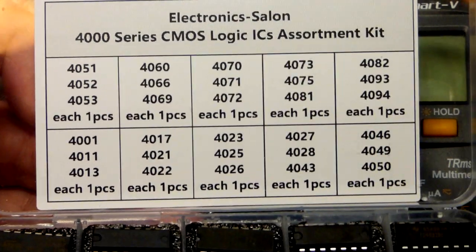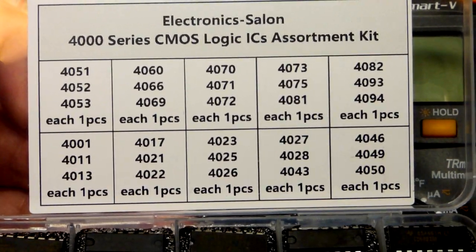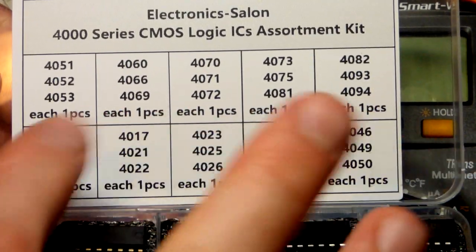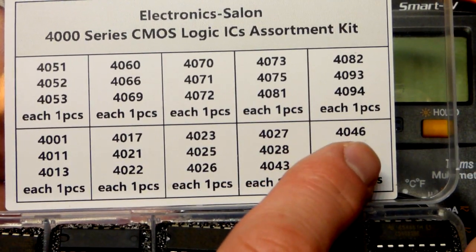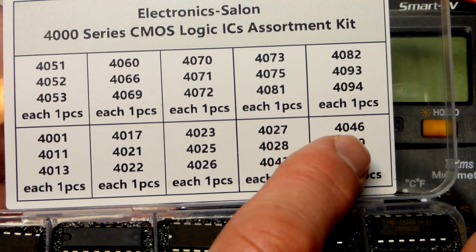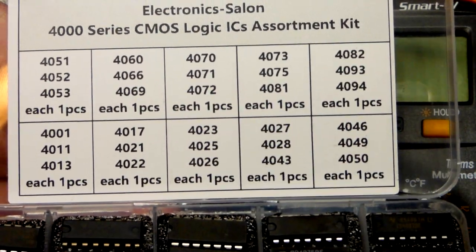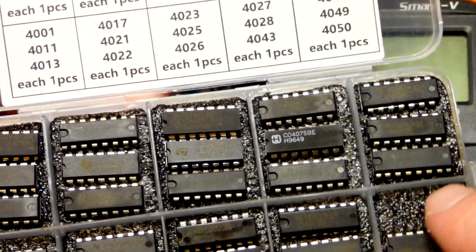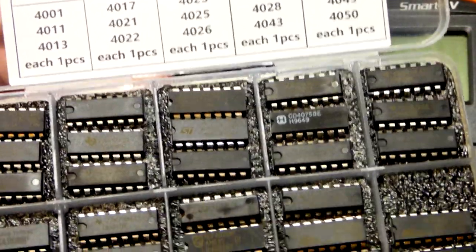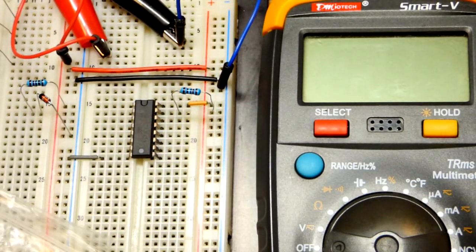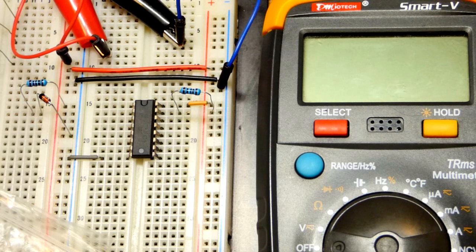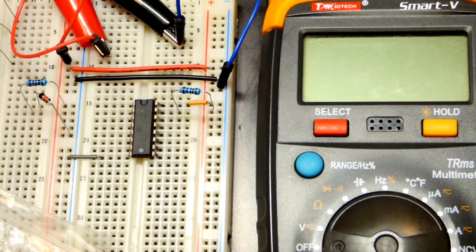I got this 4000 series CMOS logic integrated circuit assortment kit here today and I was going through the datasheet for a few of these. I came to the 4046. I'm new to using these integrated circuits and there are some interesting things about this one. First off, it has a phase locked loop and a voltage controlled oscillator, so I need to learn more about those, hopefully make videos later on.